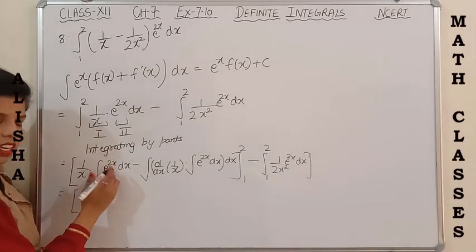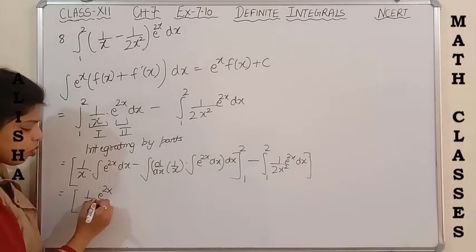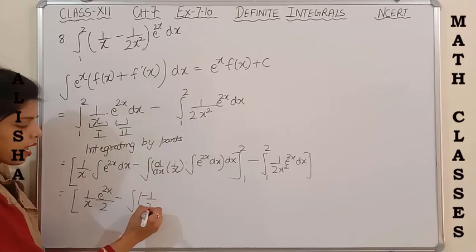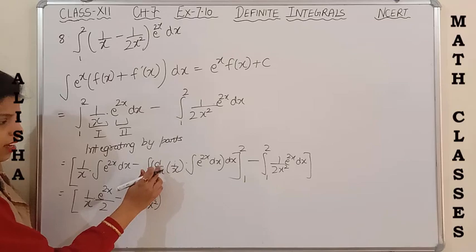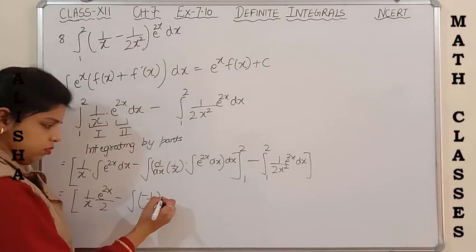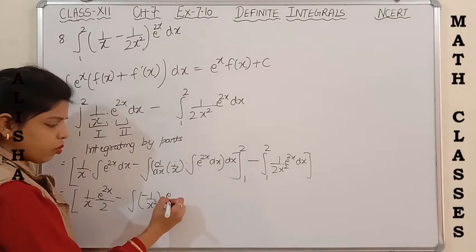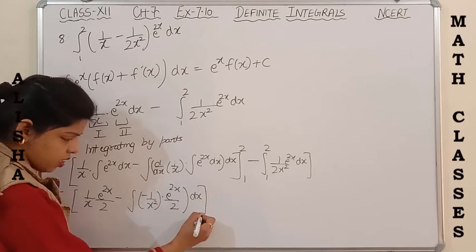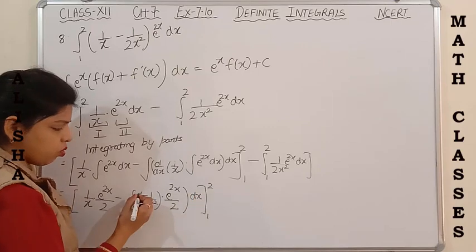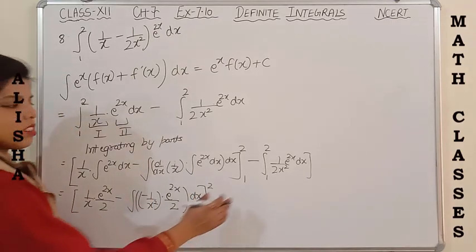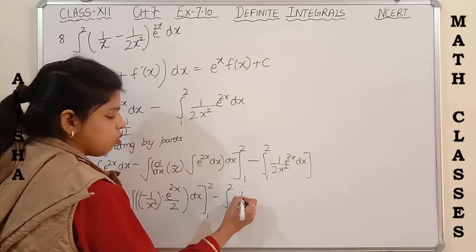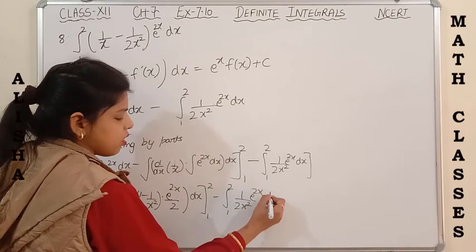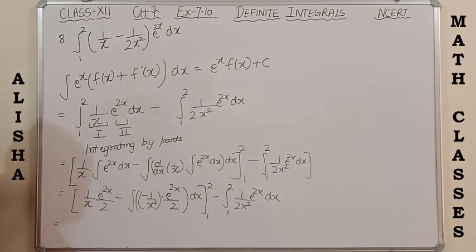The integral of e^(2x) is e^(2x)/2, and the derivative of 1/x is -1/x². So it becomes (1/x) × e^(2x)/2 minus integral of [(-1/x²) × e^(2x)/2] dx from 1 to 2, and this second integration is written as-is: from 1 to 2 of 1/(2x²) × e^(2x) dx.